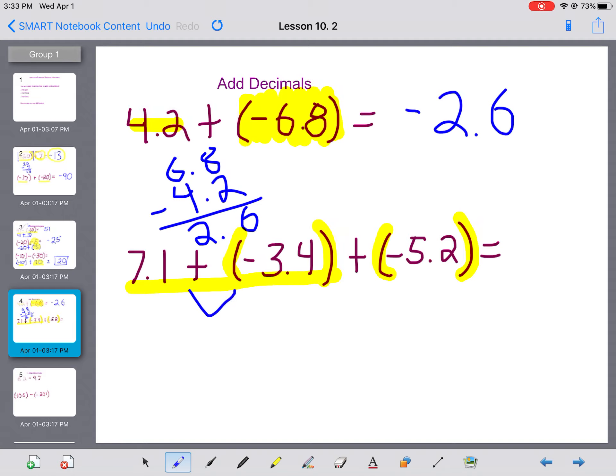So the first thing I'm going to do is I'm going to figure out, well, what is 7.1 plus negative 3.4? Again, don't be afraid to go to the side. I'll see if I can squeeze it in here. I'm going to do some subtraction. Let me go ahead and do that. And I end up with 3.7.